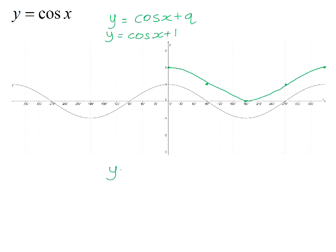If you were sketching y equals cos x minus 2, you would take the original points and move them 2 units down, and the new position of the cos graph would look like that. The effect of q has exactly the same effect on the cos graph as on the sin graph. And the effect of a also does the same — it stretches the graph vertically.